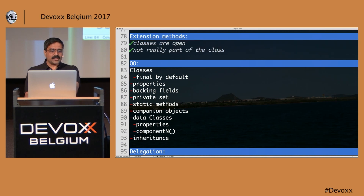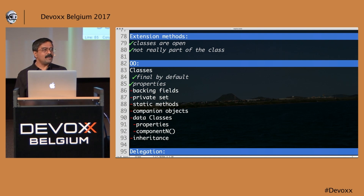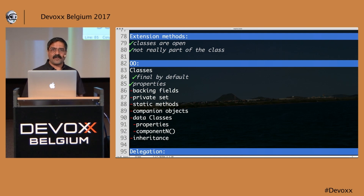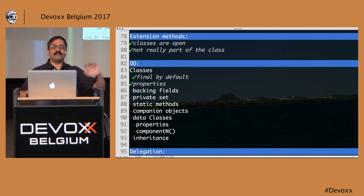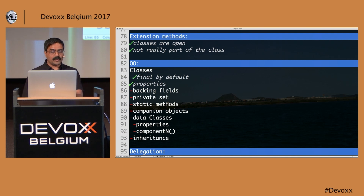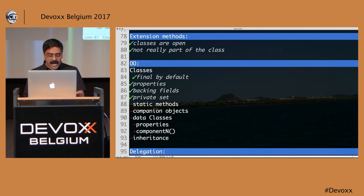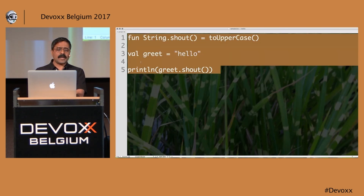Let's talk quickly about classes. Classes are final when you begin to create them. Classes can have properties — very much like C# properties. You don't have to define fields; they automatically get defined for you. So you can focus on properties rather than writing fields. If you really want to do something with a field — note you cannot define fields in Kotlin. However, you can refer to them using a name called 'field'.